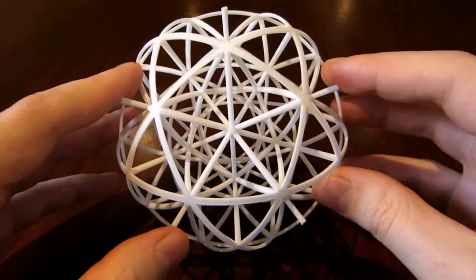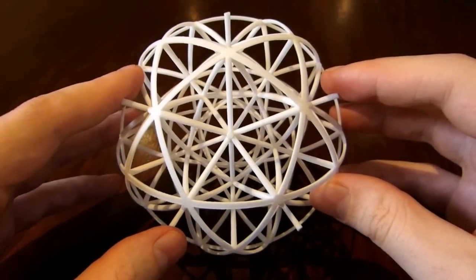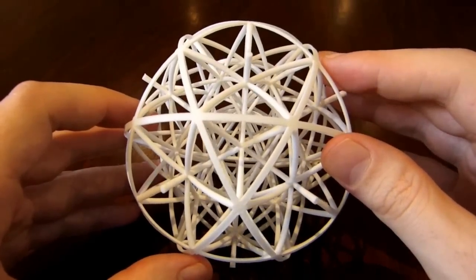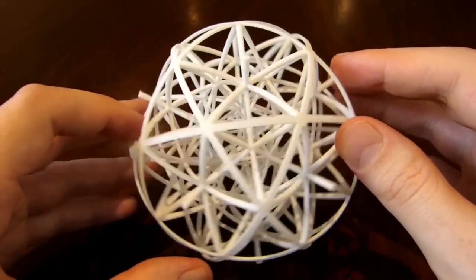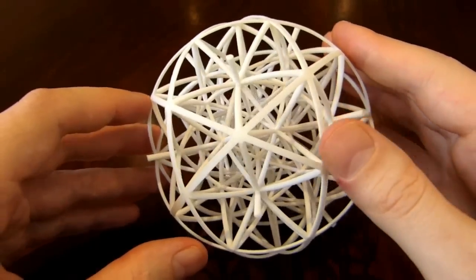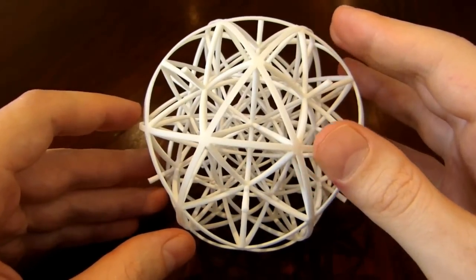There are some interesting symmetries. There's a 5-fold symmetry axis here, a 3-fold symmetry axis here, and a 2-fold symmetry axis here. So this is half of a 600 cell.